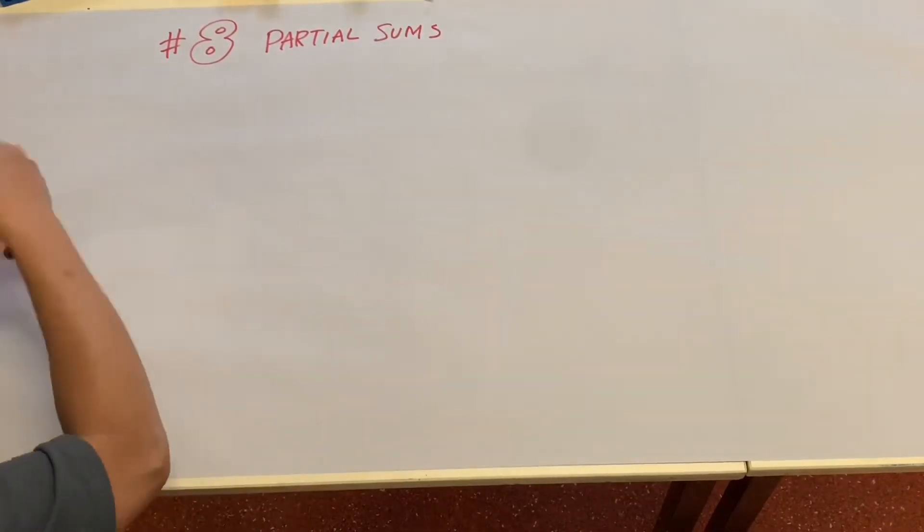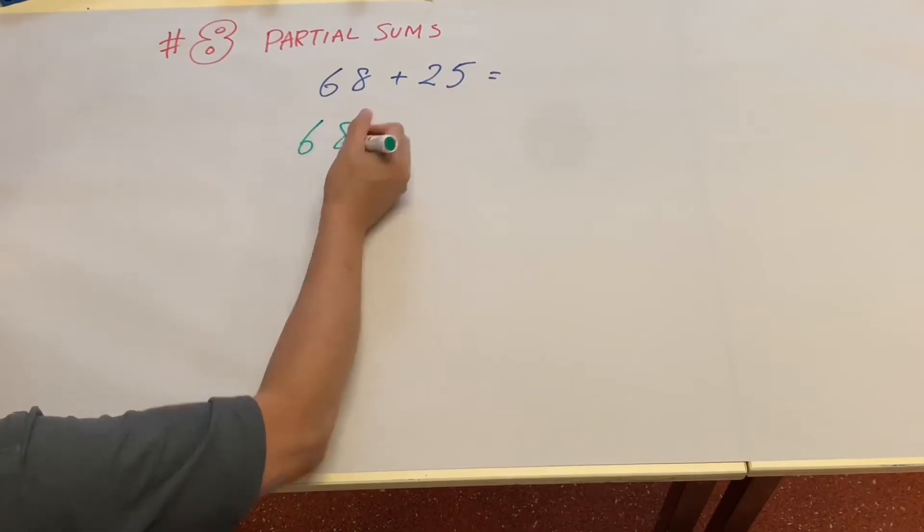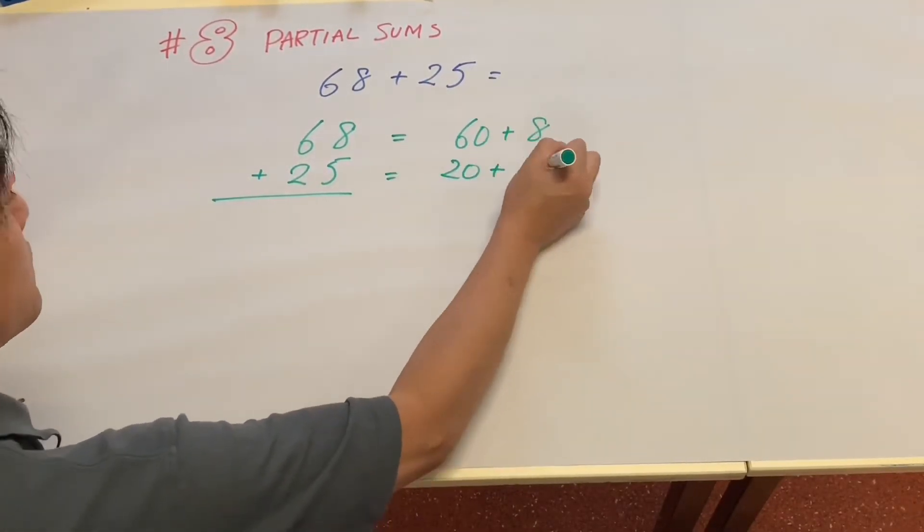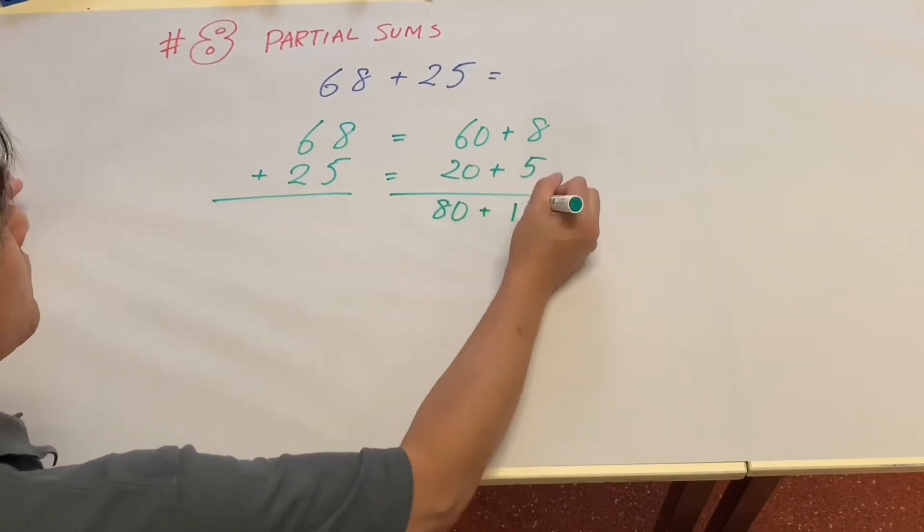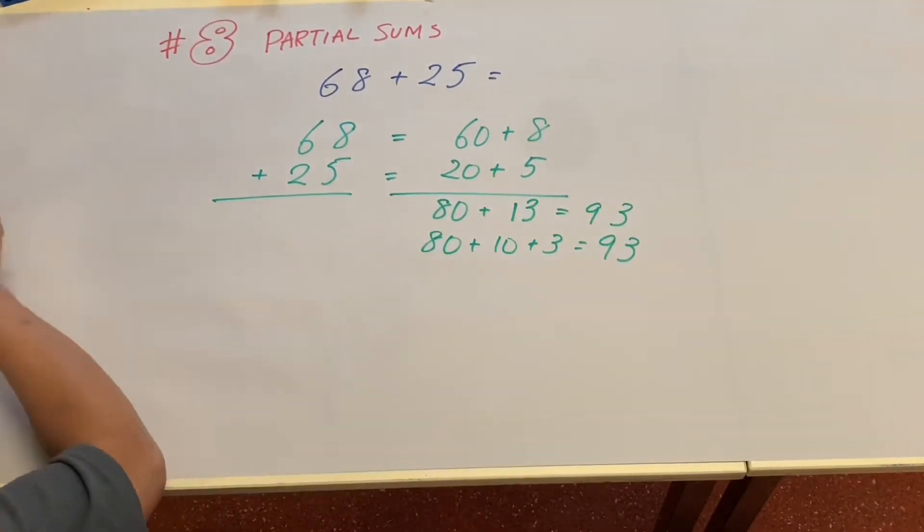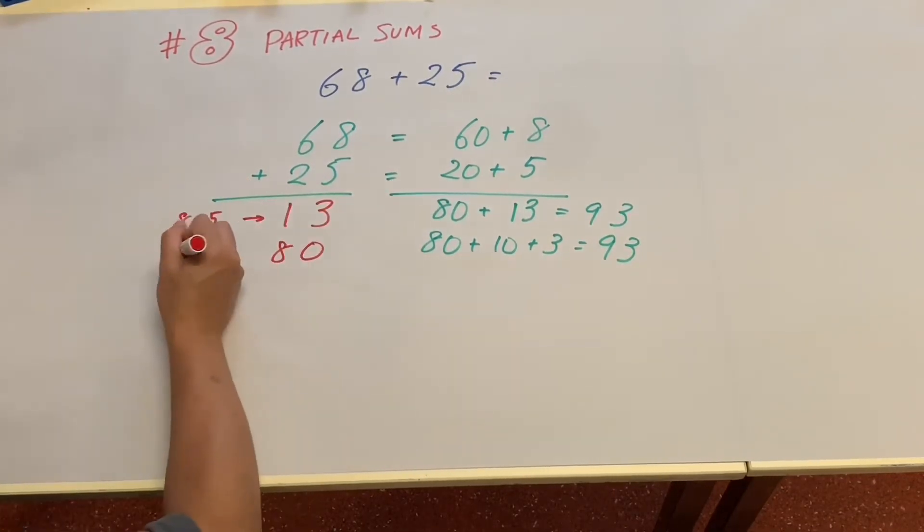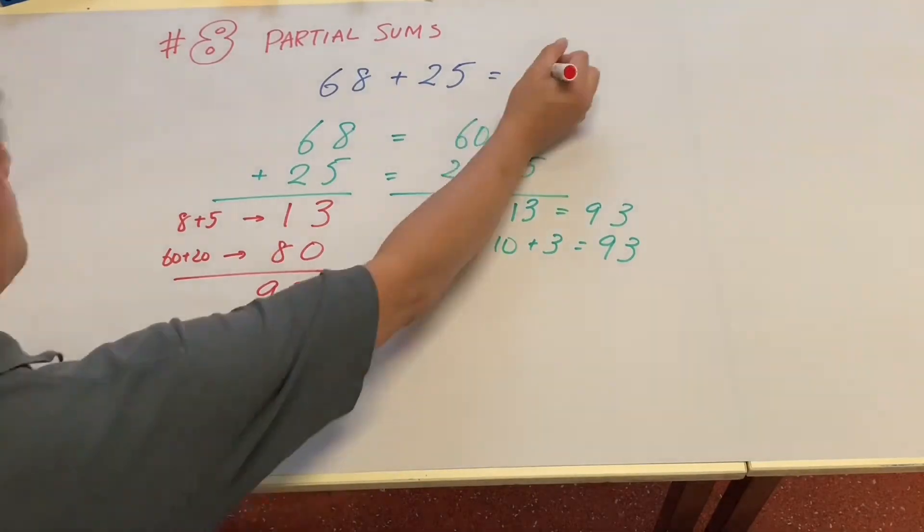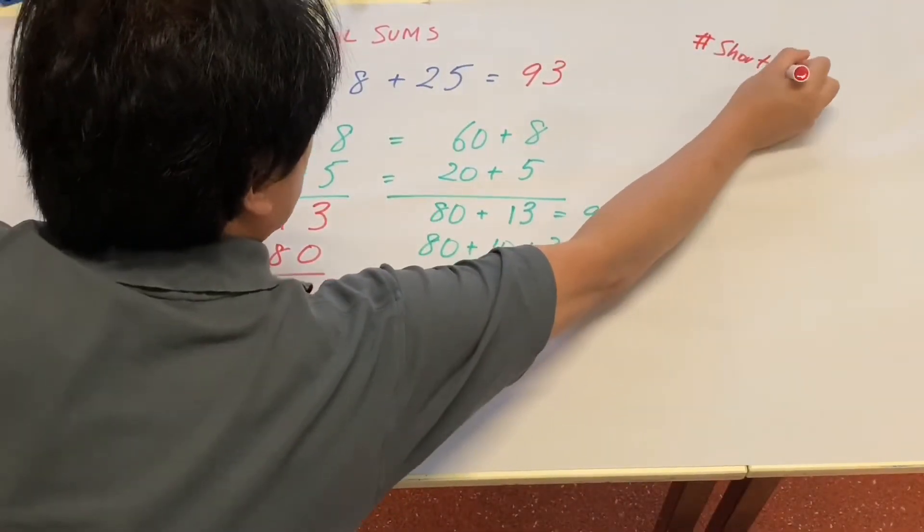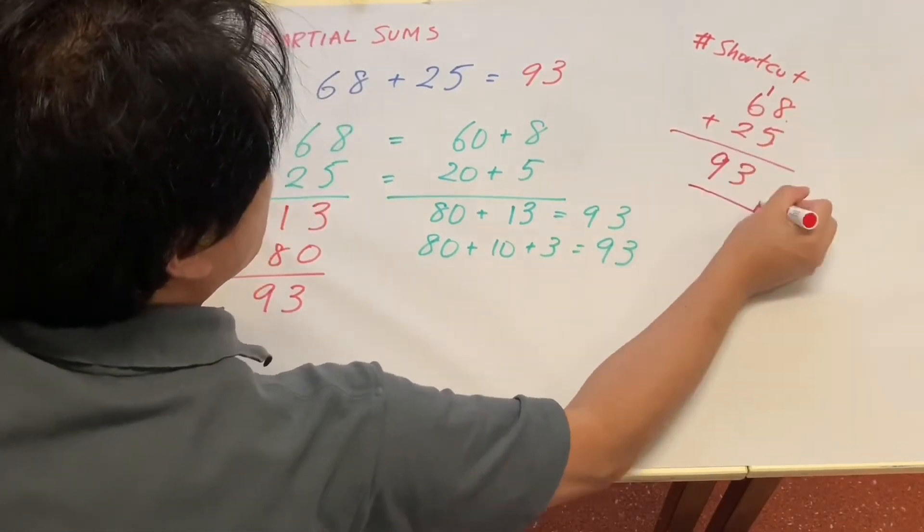We practice the partial sums in the last video. So for example, 60 plus 8 plus 20 plus 5. Now students realize that this method is not very efficient, hence some students start having a shortcut. This is what we usually do.